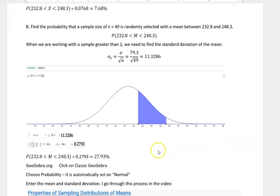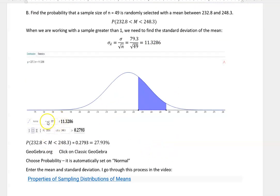So now I'm going to go into GeoGebra and do the same thing. I have the same mean, I have a different standard deviation to enter though, and I'm still looking between those same values but now I have a 27.93 percent chance.